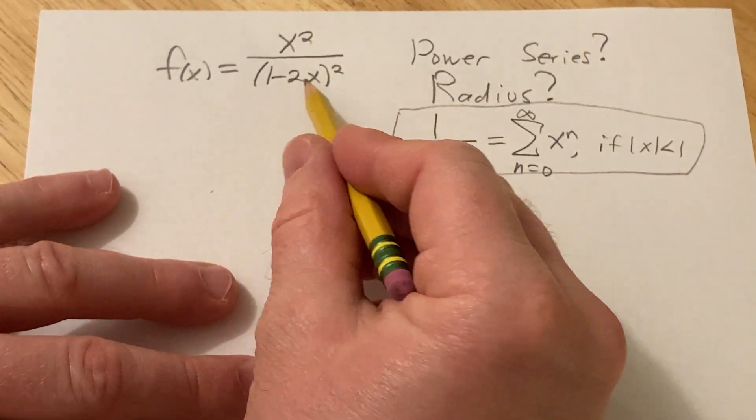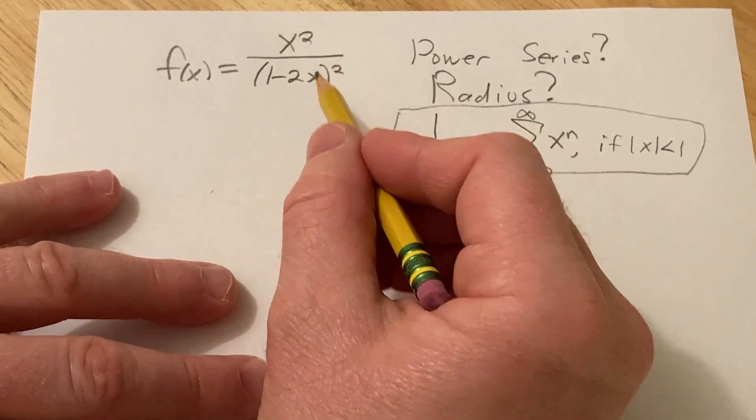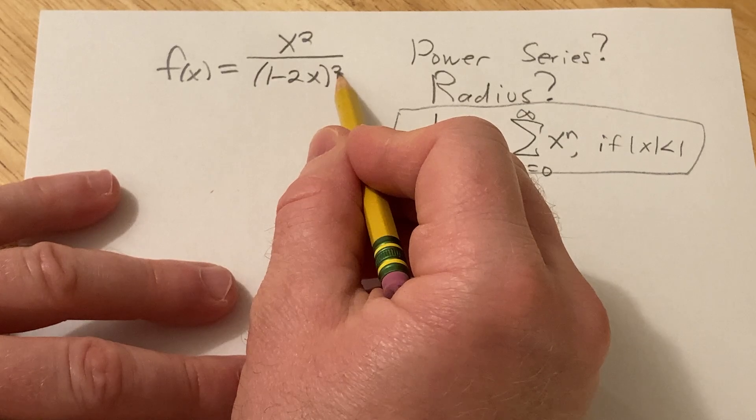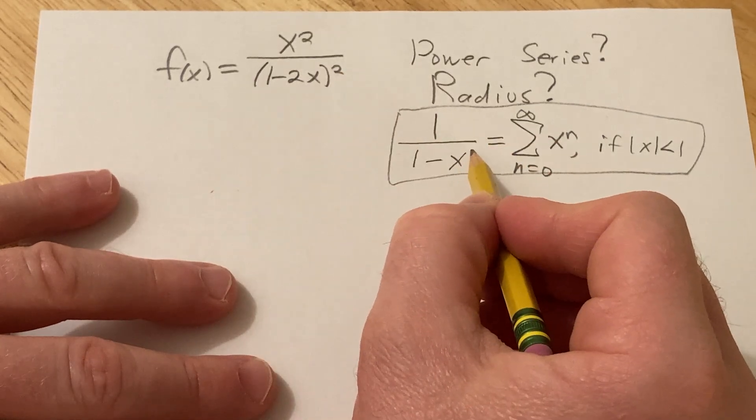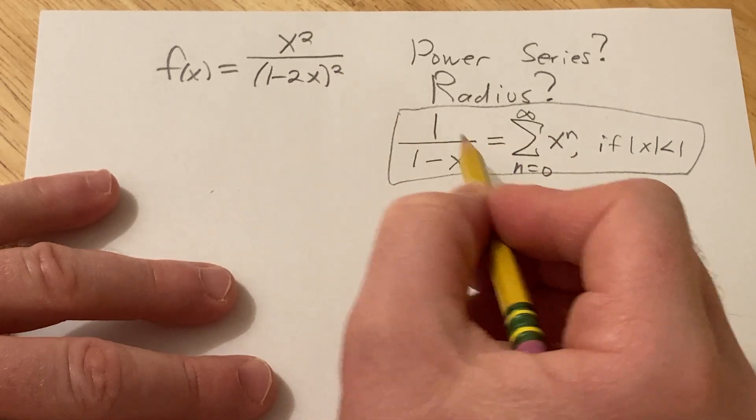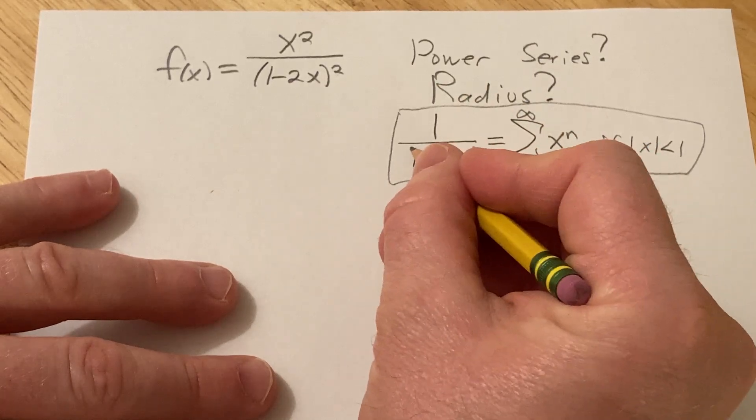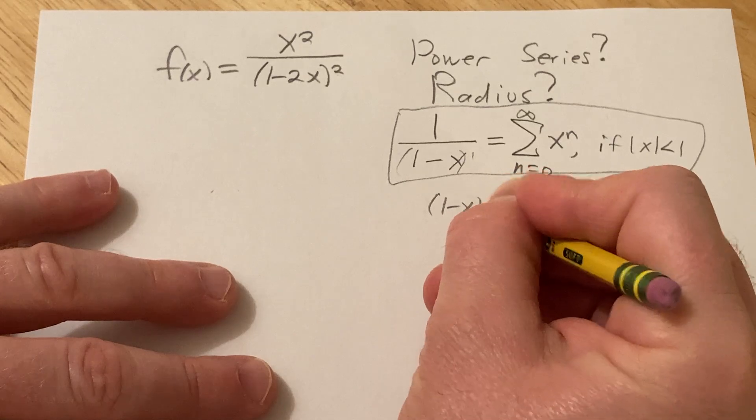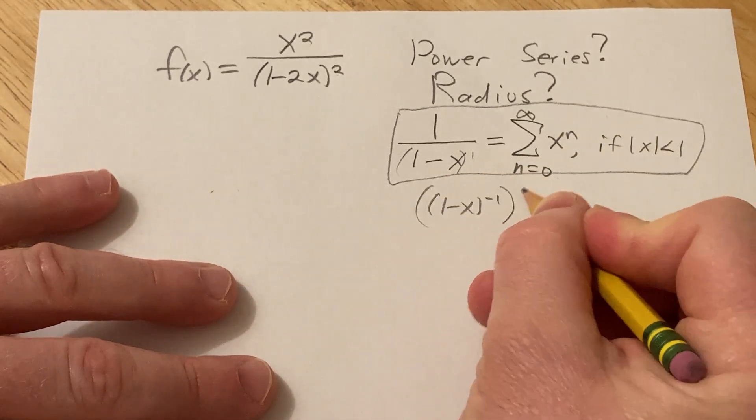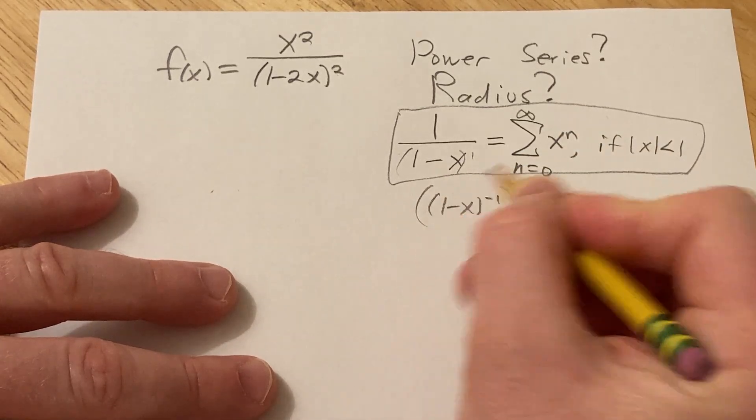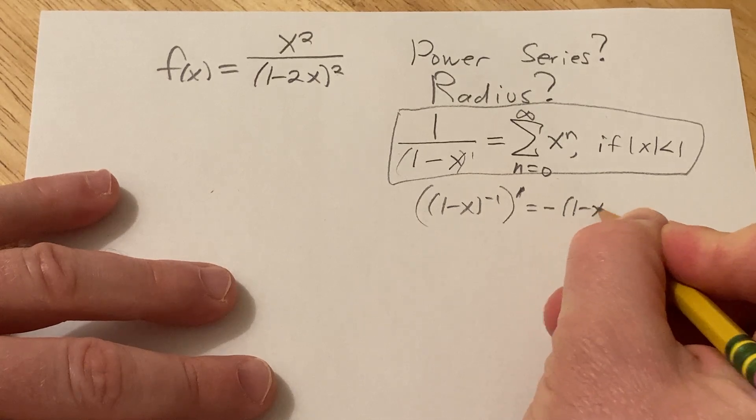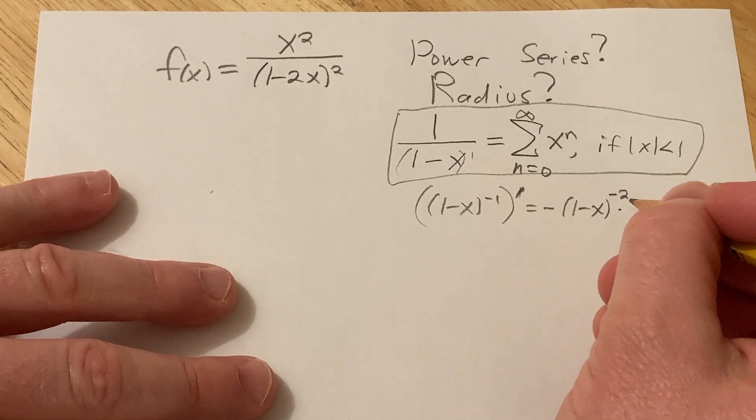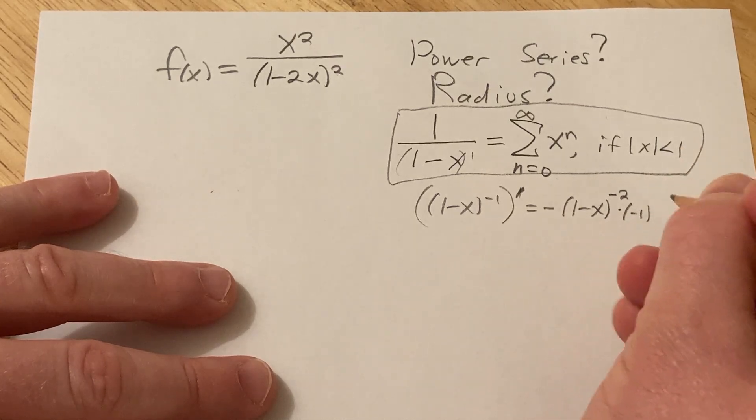So here we have something that kind of looks like this but not really. So I am noticing this 2 here and it's making me think that the first derivative of this is going to have a 2 on the bottom. The reason is this, if you take this and you write it like this and you differentiate, bring the negative 1 in the front, you subtract 1 from the exponent, that's the power rule, and then you multiply by the derivative of the inside, which is negative 1.